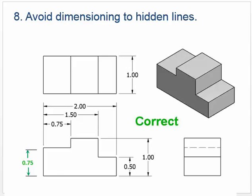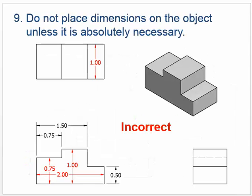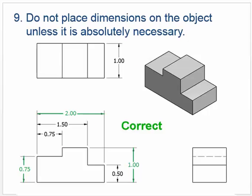Rule number nine: do not place dimensions on the object unless absolutely necessary. Sometimes it is necessary, but usually it's not. We want to avoid placing them on the inside. A lot of students like to do that because they think it looks cleaner on the outside, but put them on the outside. Here's the correct way: they've moved the one inch from being inside to outside, and the two inch has been moved up, making it a much cleaner drawing.